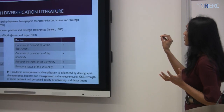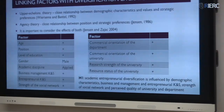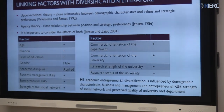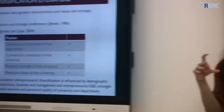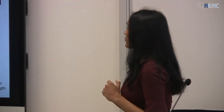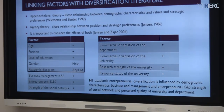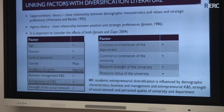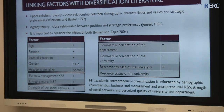We need to link academic entrepreneurship and diversification literature to provide a good theoretical position. When we look at individual-level factors that influence firm diversification, it has been argued that demographic factors as well as the position of top managers influence firm diversification. However, here we are talking about diversification at the level of the individual academic. Roughly, we divided the factors into four: demographic factors; business management and entrepreneurial skills; social network; and perceptual factors. We hypothesized that all four factors would influence academic entrepreneurial diversification.